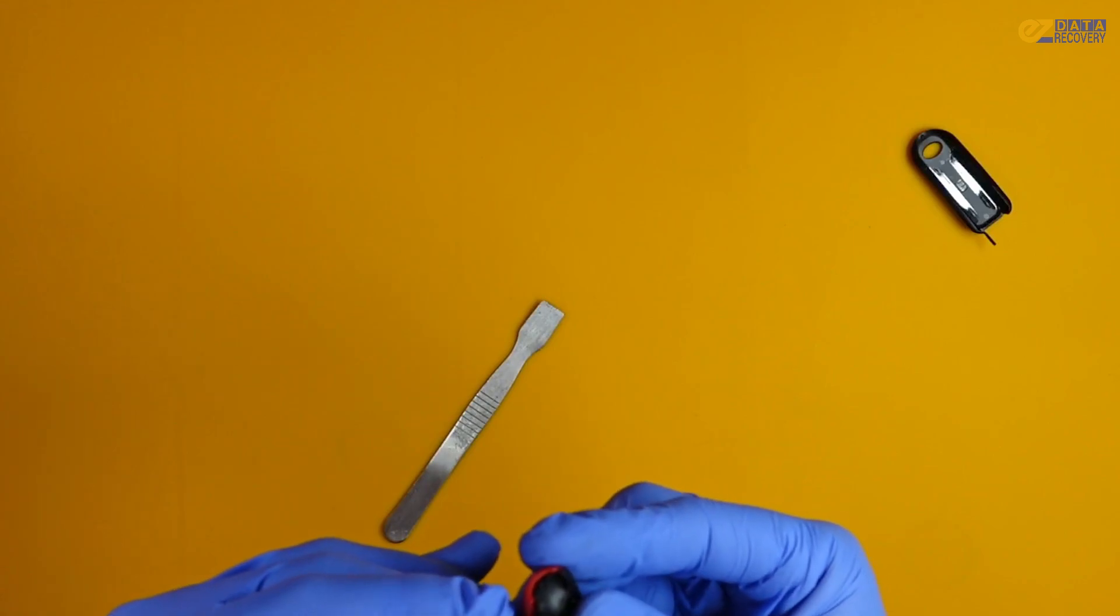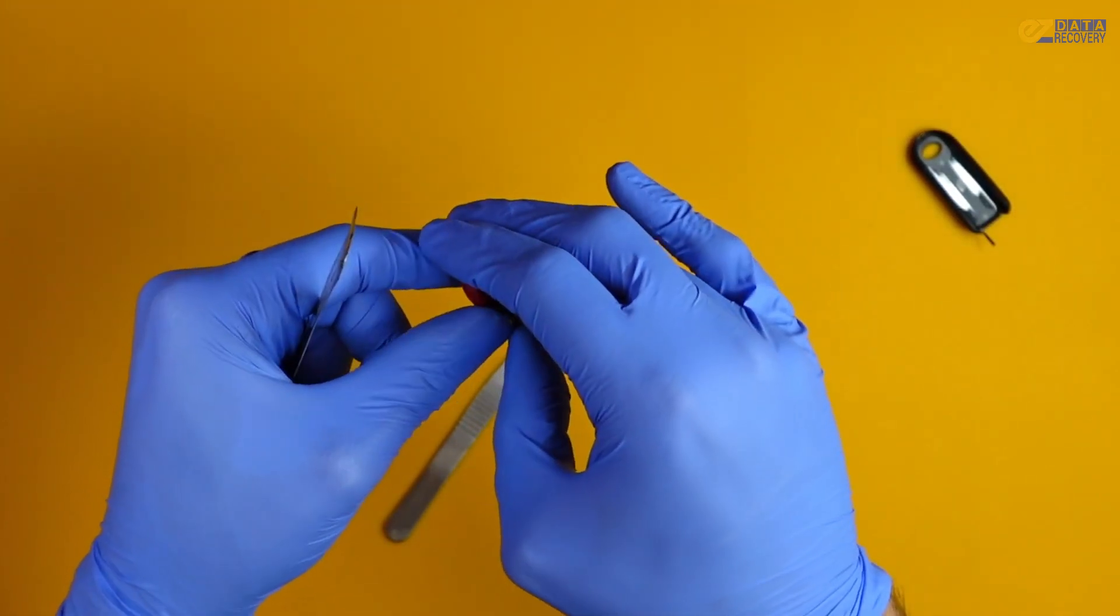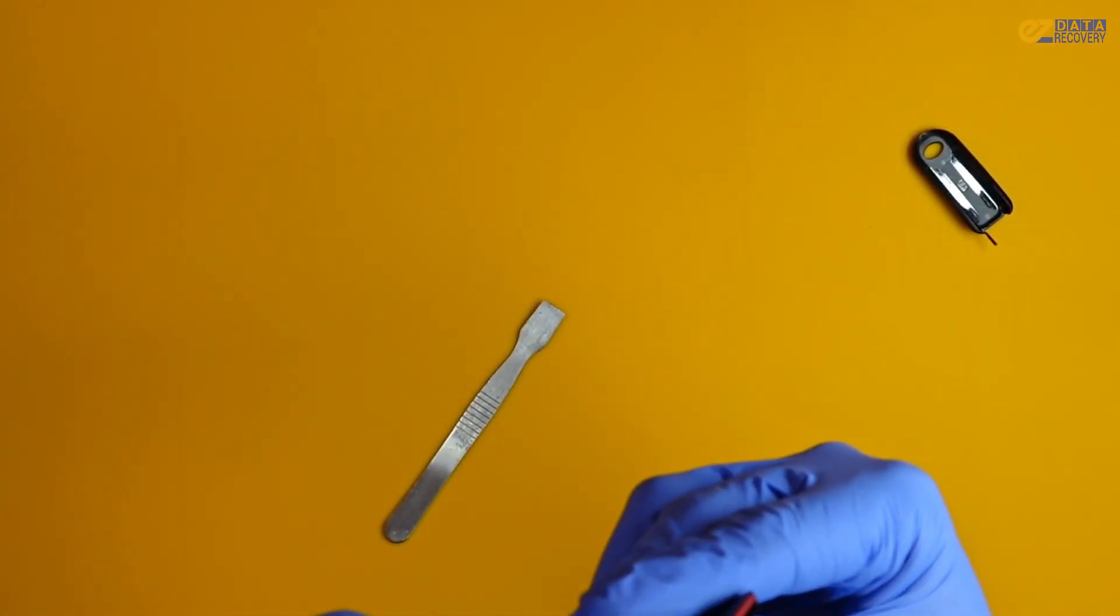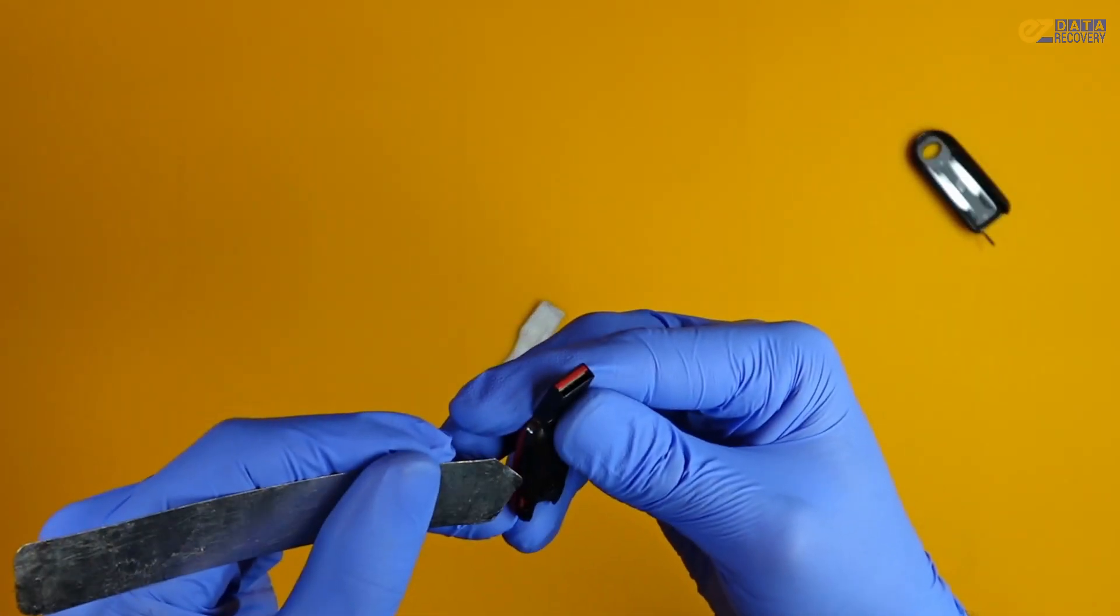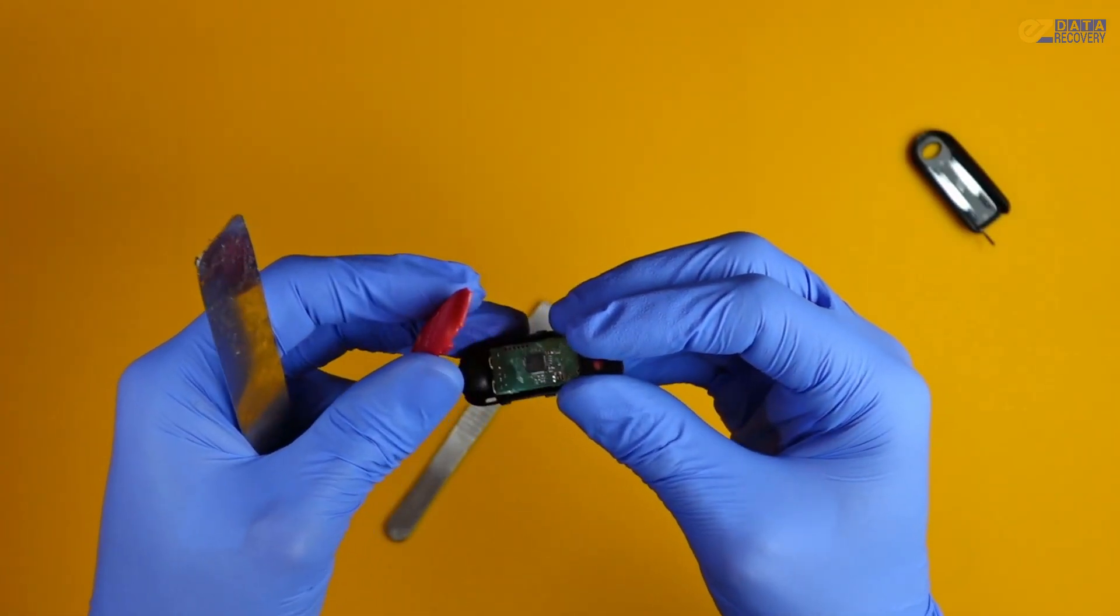And from there, we're going to try to open this up. We're going to do that by slipping a thin metal pry tool inside of this drive. Now we need to be very careful here.